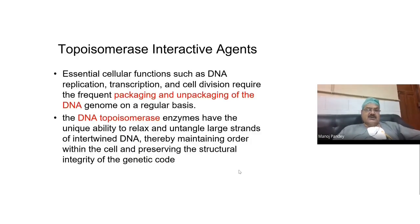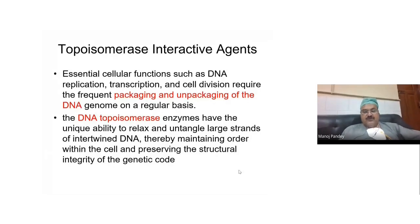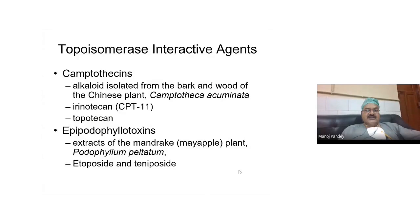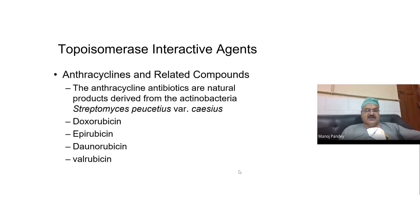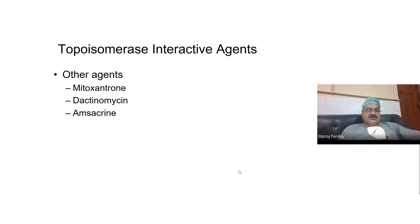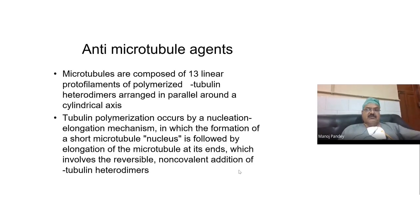There is a class called topoisomerase interactive agents. Topoisomerase is an enzyme required for packaging and unpackaging of DNA. These agents inhibit the topoisomerase enzyme and interfere with the unpacking of DNA required before DNA synthesis takes place. Among these drugs, classified as camptothecins, epipodophyllotoxins, and anthracyclines — including doxorubicin, epirubicin, daunorubicin, and valrubicin. The suffix 'rubicin' indicates they are red-colored compounds. Also included are mitoxantrone and dactinomycin.